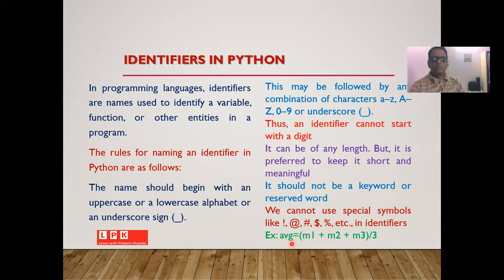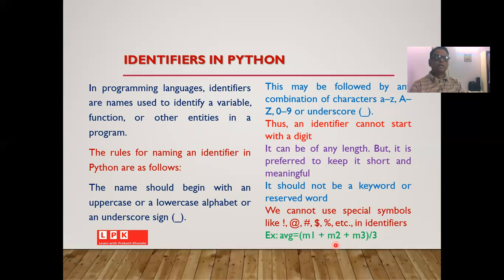For example, you can write something like: average = m1 + m2 + m3, where m1, m2, m3 are names denoting marks and average is the average of the marks. In this way you can make use of identifiers to give names to variables, functions, or other entities in the Python program.